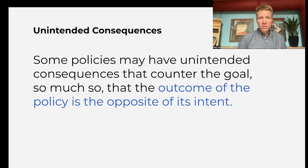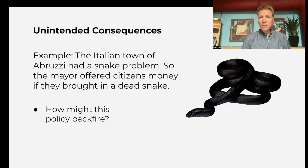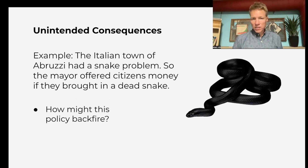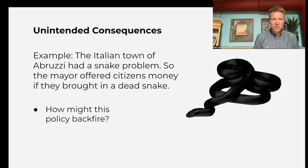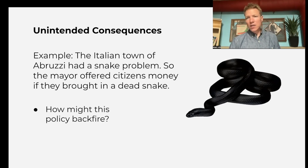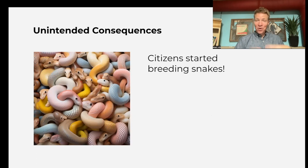Some policies may have unintended consequences such that the actual outcome is the opposite of the intent — the policy completely backfires. The famous example is a town in Italy with a bunch of snakes. They said, 'If you bring us a snake, we will give you money' — a bounty on snakes. How might this backfire? Citizens started breeding snakes, raising snakes in their basement. The outcome of the policy was more snakes, not fewer.